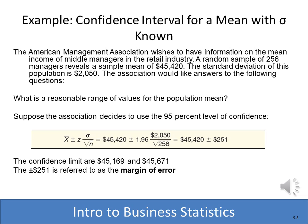With the z-score of 1.96, the known standard deviation, and n, we compute the margin of error: 1.96 times 2,050 divided by the square root of 256, giving a margin of error of $251. So our 95% confidence interval runs from $45,169 to $45,671. That means if we pulled samples, 95 out of 100 times we would capture the real population mean between those two values.